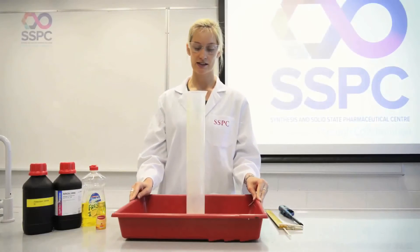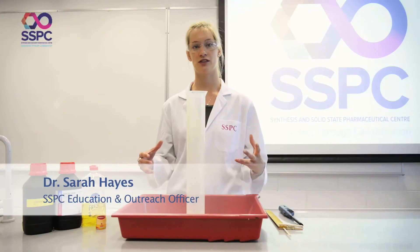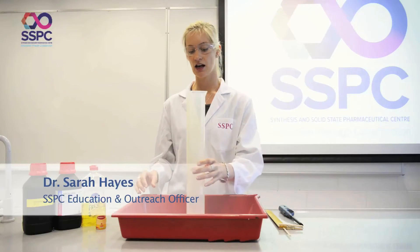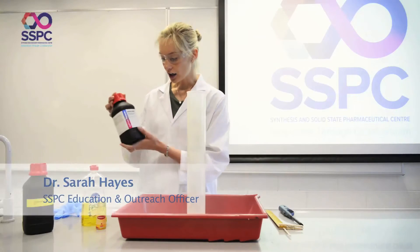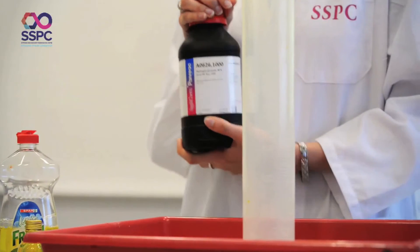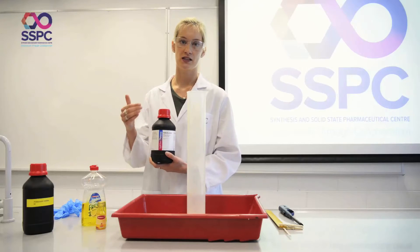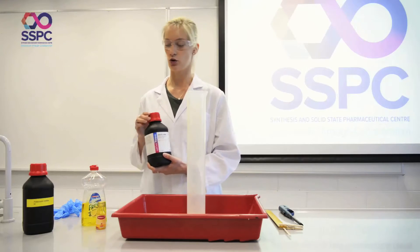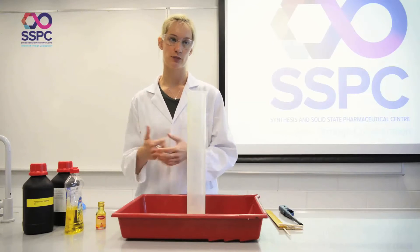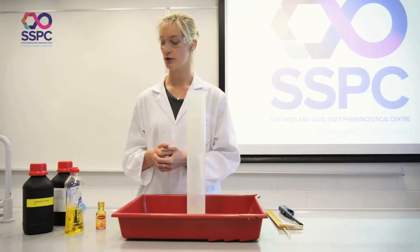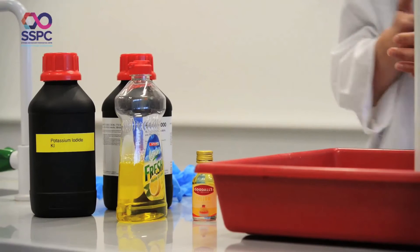We call this experiment either the iodine snake or the elephant's toothpaste. What we're doing here is looking at hydrogen peroxide H₂O₂ and how it decomposes into oxygen and water. In order to speed up this reaction we're going to use some potassium iodide to act as a catalyst.